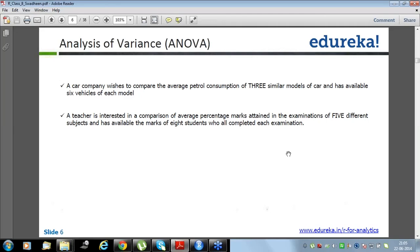So if mean is there, average percentage, average petrol consumption, that means the mean has to be compared. And as mean has to be compared and there are more than two variables or more than two entities, we have to use the analysis of variance in this case.